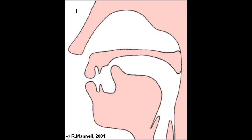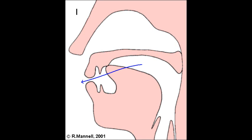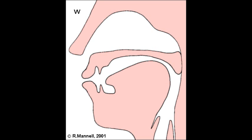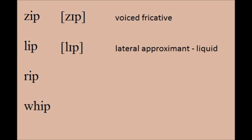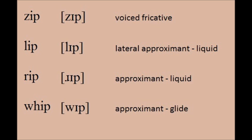Finally, we have approximants and lateral approximants. Both involve air flow with only slight turbulence — not enough to cause an audible sound, but enough to alter the flow of air and sound waves to cause a change in quality. Approximants are commonly divided into glides and liquids. Glides have a corresponding vowel whereas liquids do not. Compare the English words zip, lip, rip, and whip: zip begins with a voiced fricative, lip with a lateral approximant (a liquid), rip with an approximant (also a liquid), and whip with an approximant that is a glide.